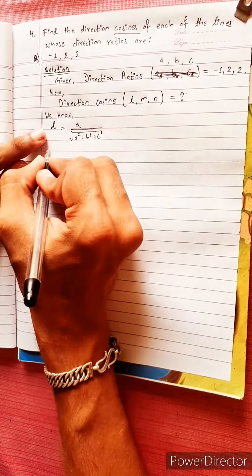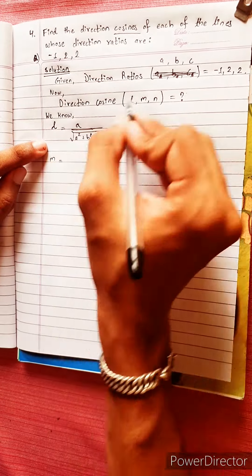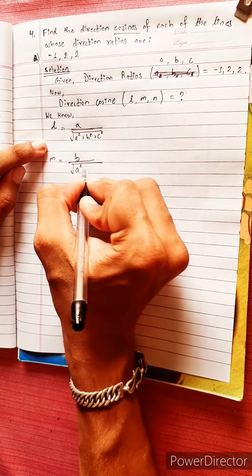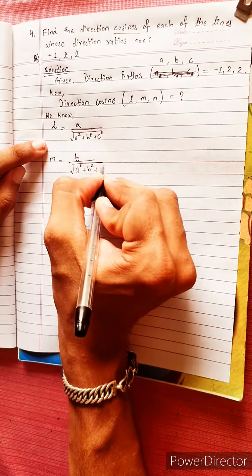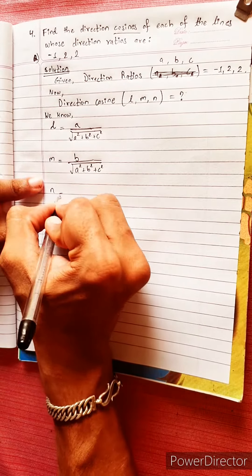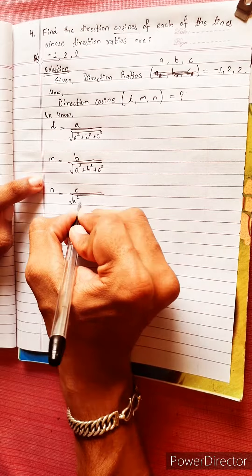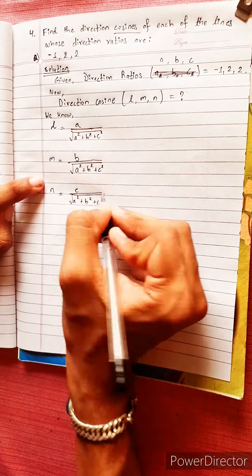M1 is y-axis, y-axis is b, b divided by, under root, a square plus b square plus c square. And N is c divided by a square plus b square plus c square equals to.